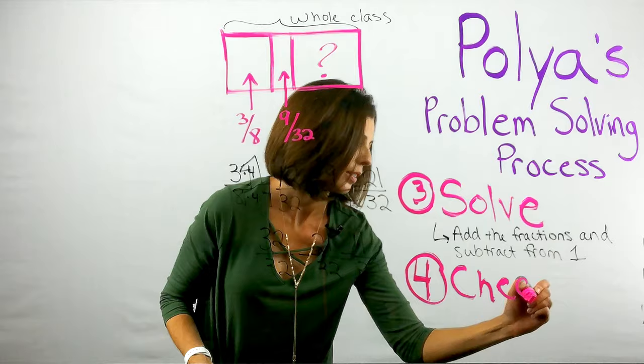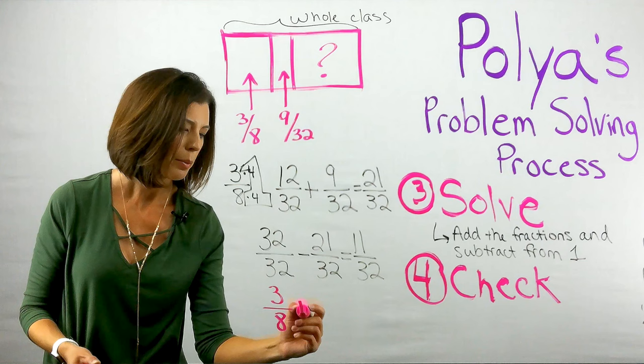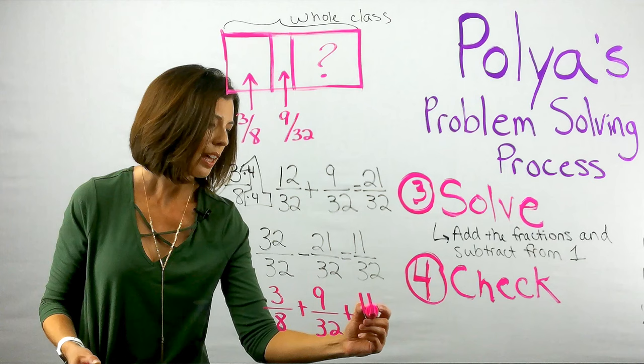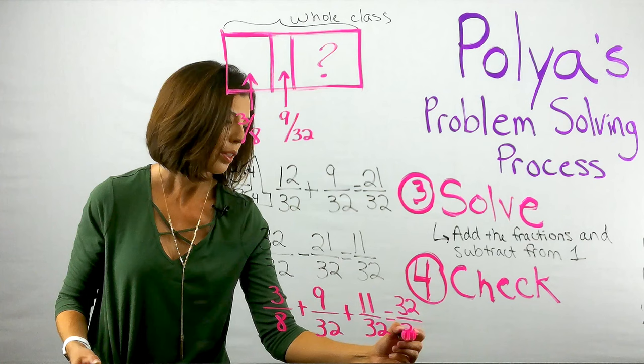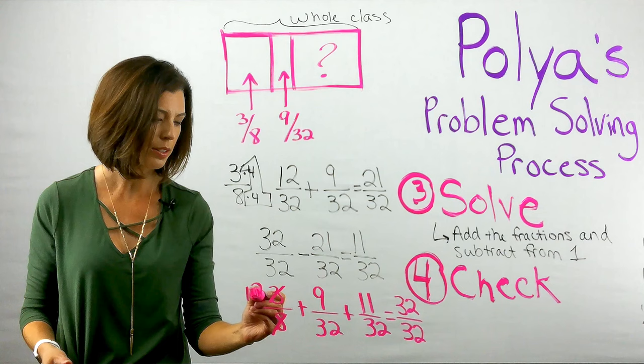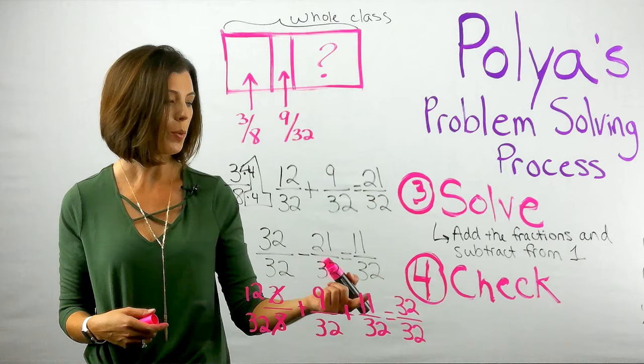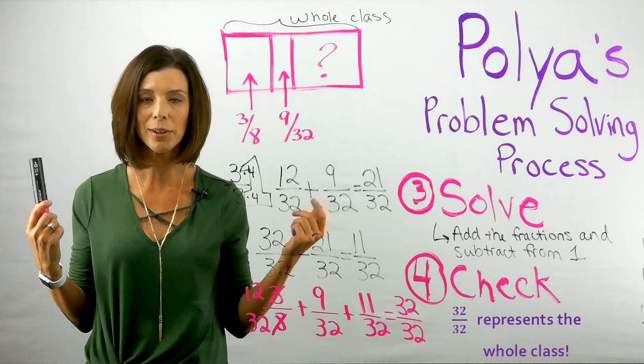I can go ahead and add three-eighths plus nine thirty-seconds plus eleven thirty-seconds. And if I'm correct I should get thirty-two thirty-seconds. I know that I've already changed this into thirty-seconds and it was twelve thirty-seconds. Twelve plus nine is twenty-one. Twenty-one plus eleven is thirty-two. Thirty-two thirty-seconds. So I know that I'm correct.